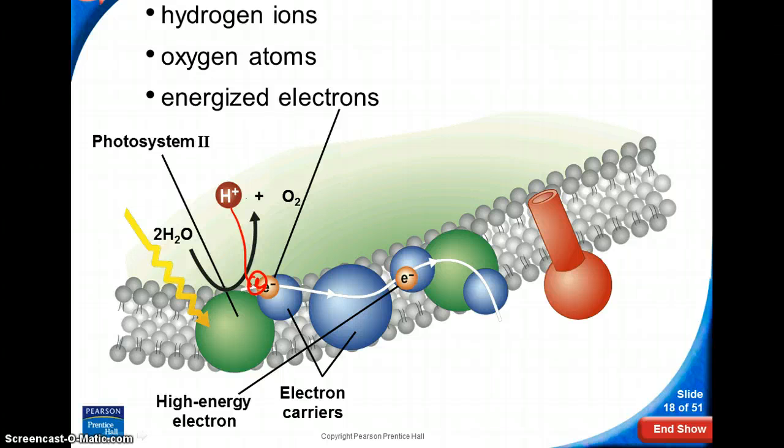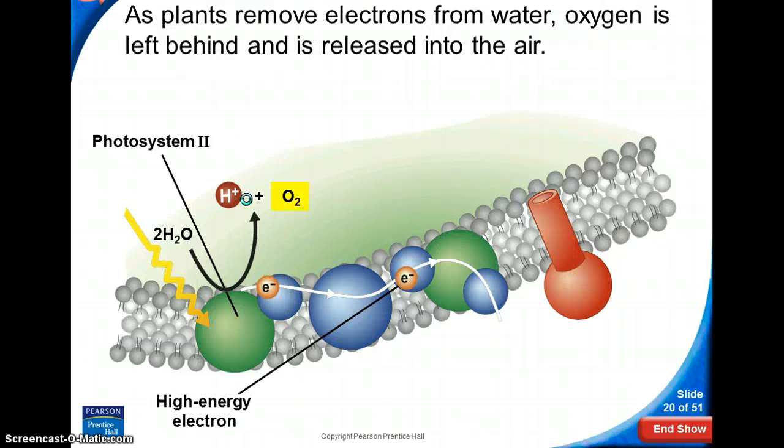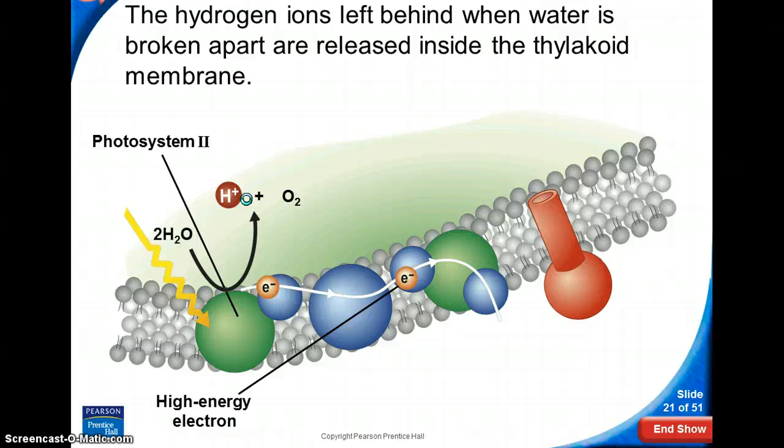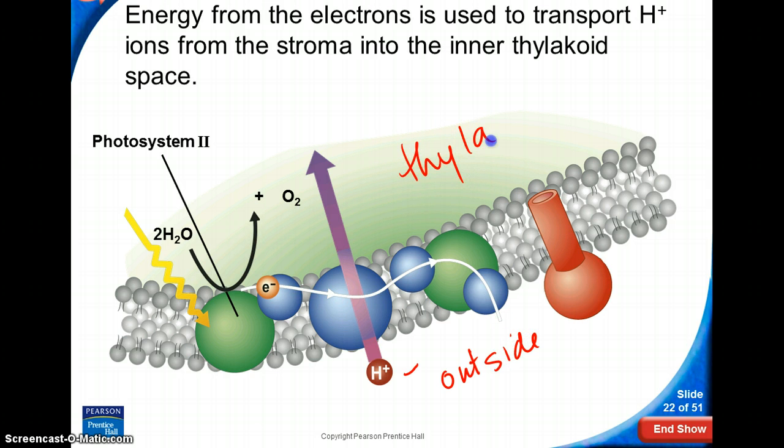And this electron then moves through these molecules. It moves through these molecules so that this hydrogen, which is on the outside of the thylakoid, here's the thylakoid, can actually move in. And we'll see that right now. So you see how that electron moved through, hydrogen pumped in.